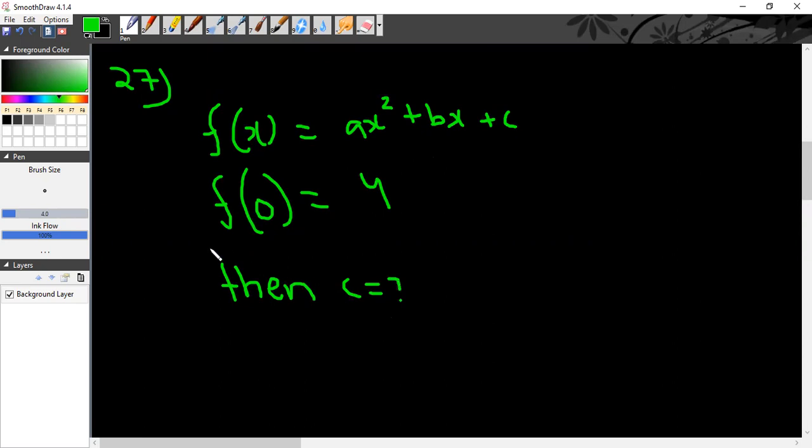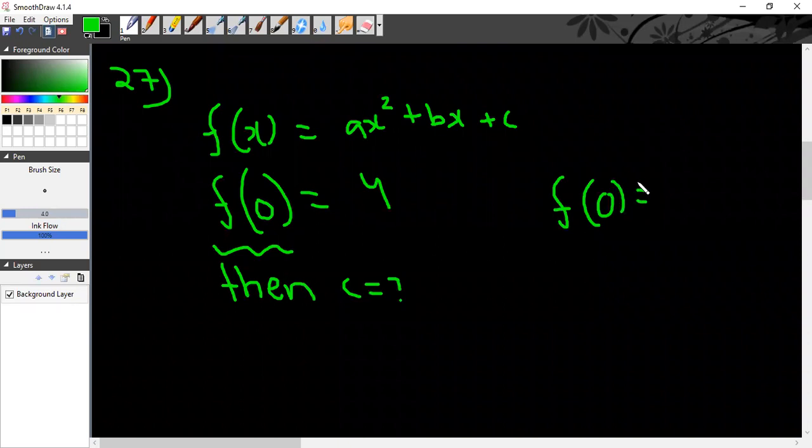What is the value of c? What does f(0) mean? f(0) means that in place of x, we put 0. So in the entire equation, in the entire right-hand side, wherever x is, we put 0.